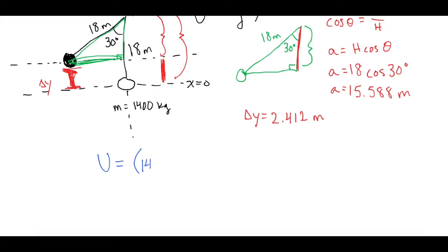So 1400 kg times gravity which is 9.8, and times that by our delta y which is 2.412 meters, and that gives us a gravitational potential energy change of 33,092.64 joules, and then put that into scientific notation.